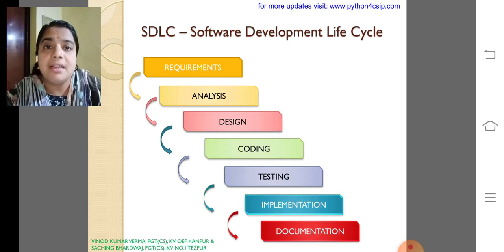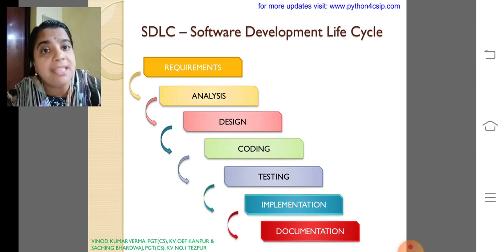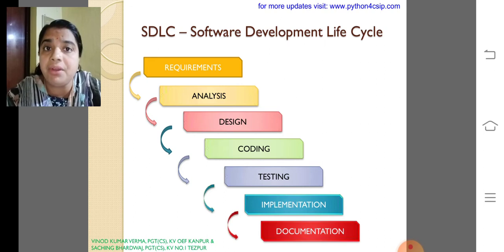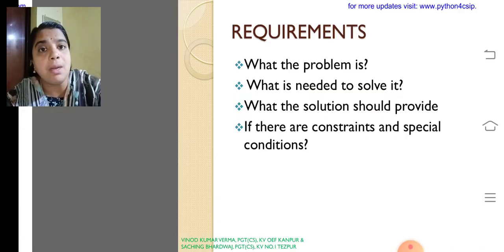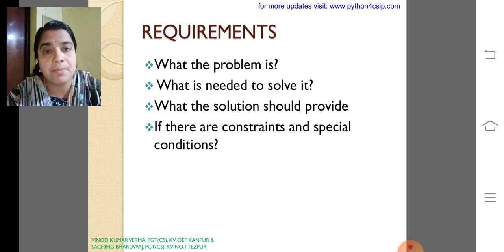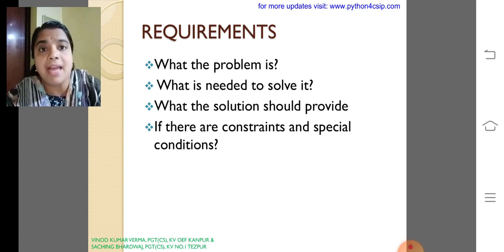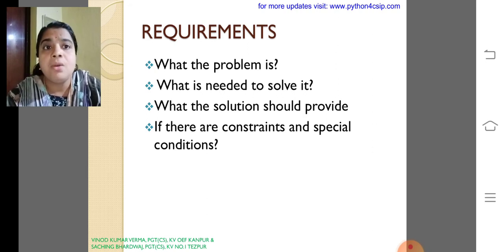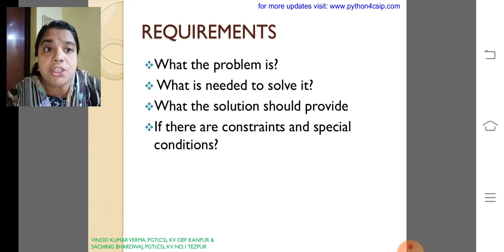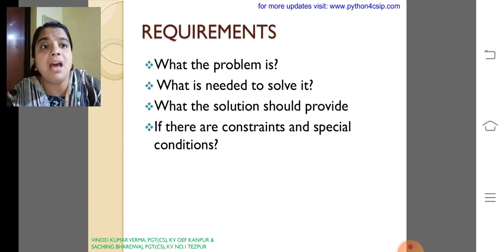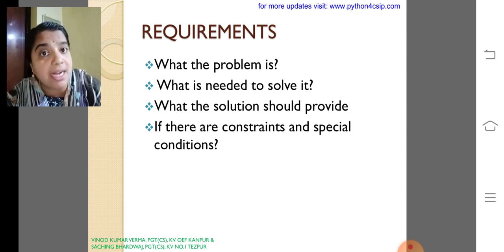We should discuss more about each and every step in software development life cycle. The first one is requirements. In requirements, we should have to be aware about what the problem is, what is needed to solve it, what the solution should provide, if there are constraints and special conditions.